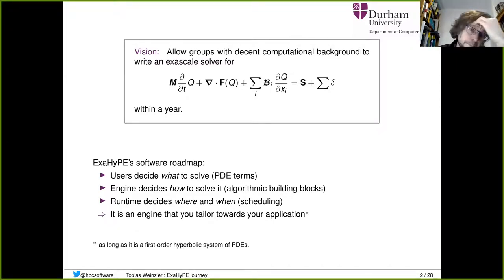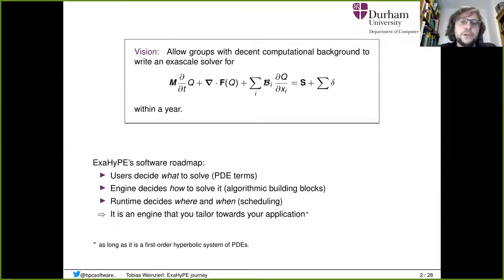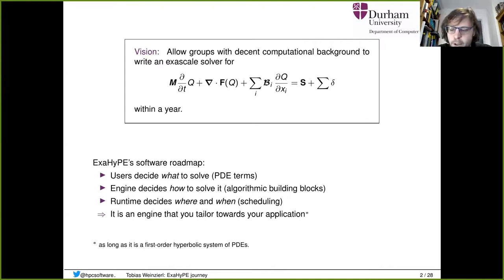This is a blunt and very ambitious vision. You have visions if you leave the pub, isn't it? So you have to tell people how you get there — that's the art. We wanted to achieve that by writing an engine where users decide what to solve, and the engine then decides how to solve it, and it decides where and when — it does the scheduling. So it's an engine. What does that mean? Computer scientists are well familiar with the term framework — that's something we write every day.